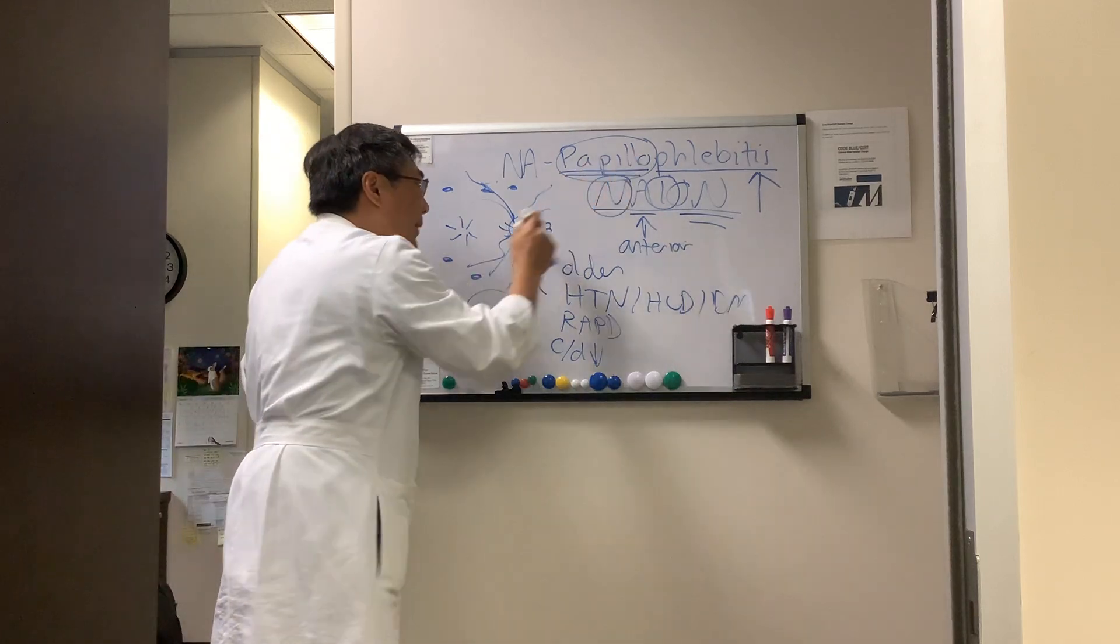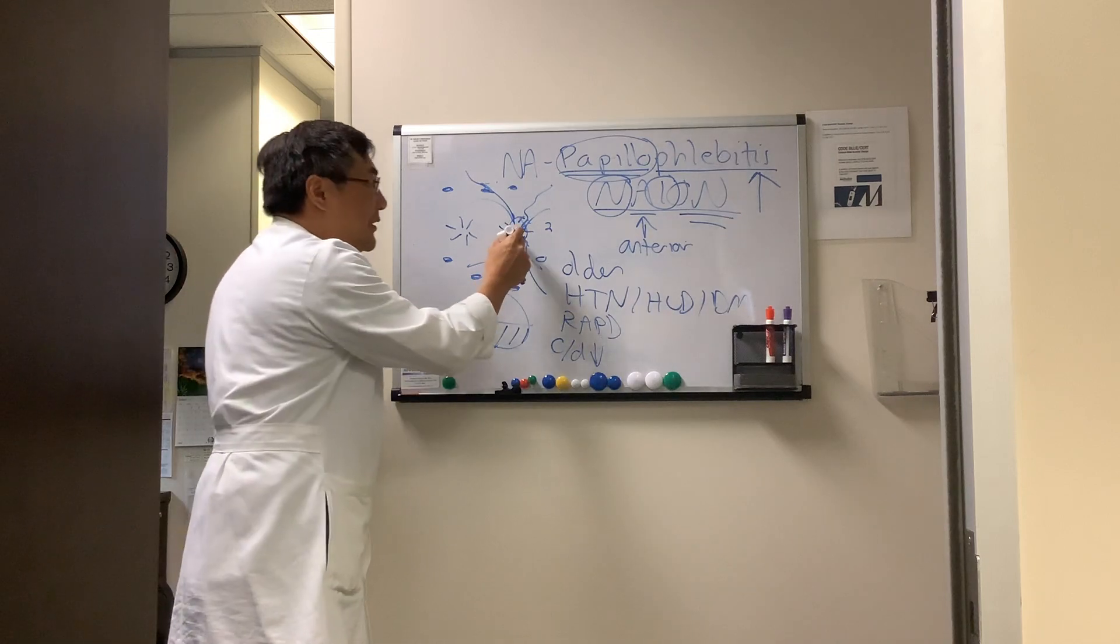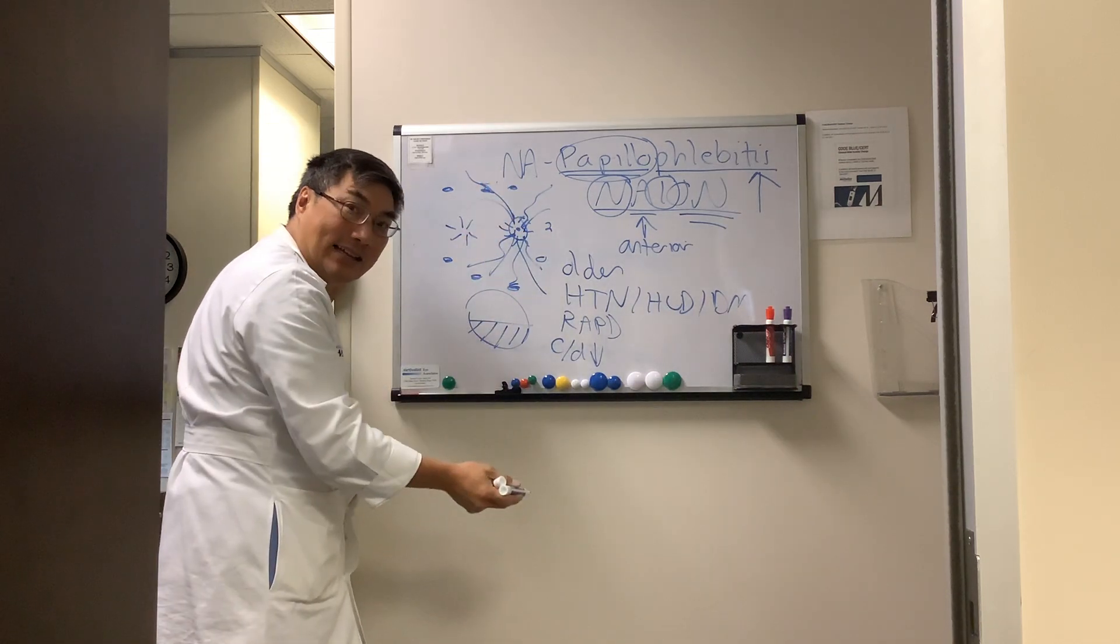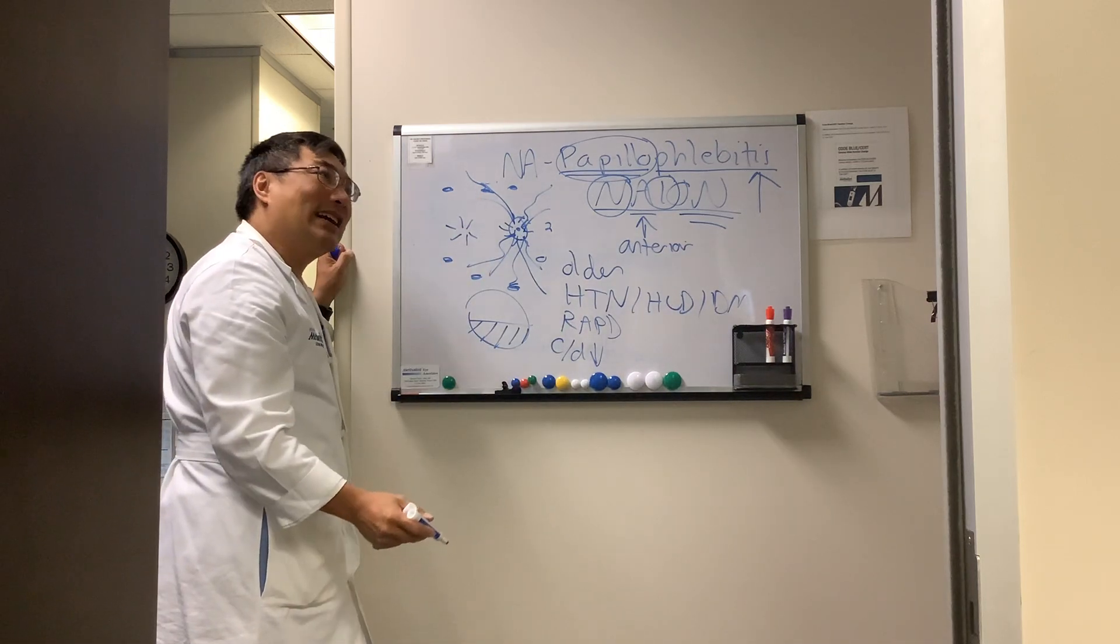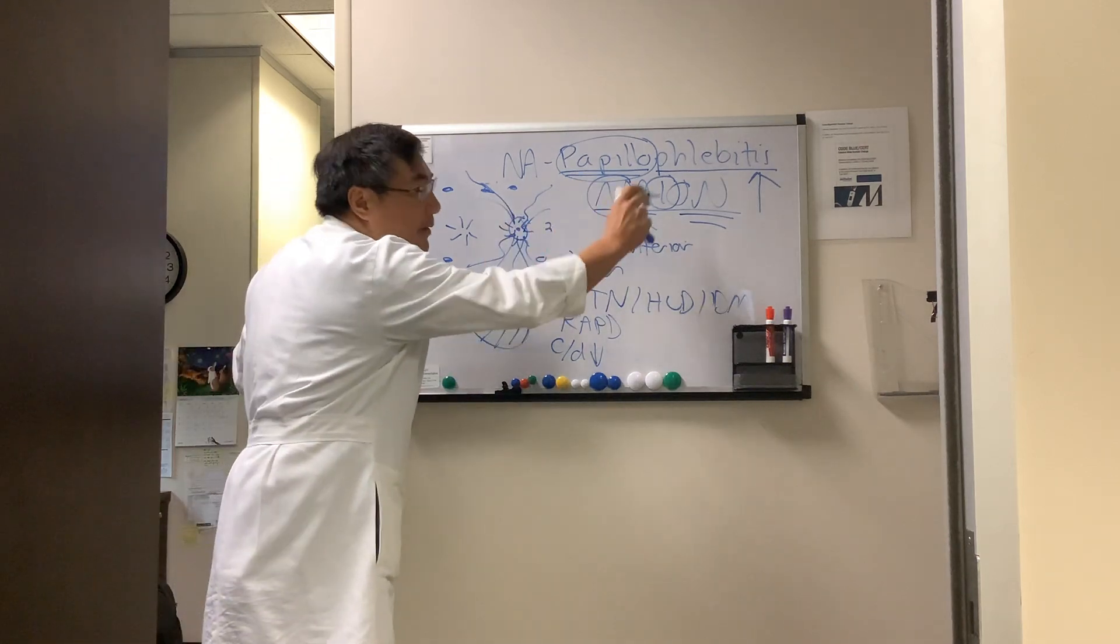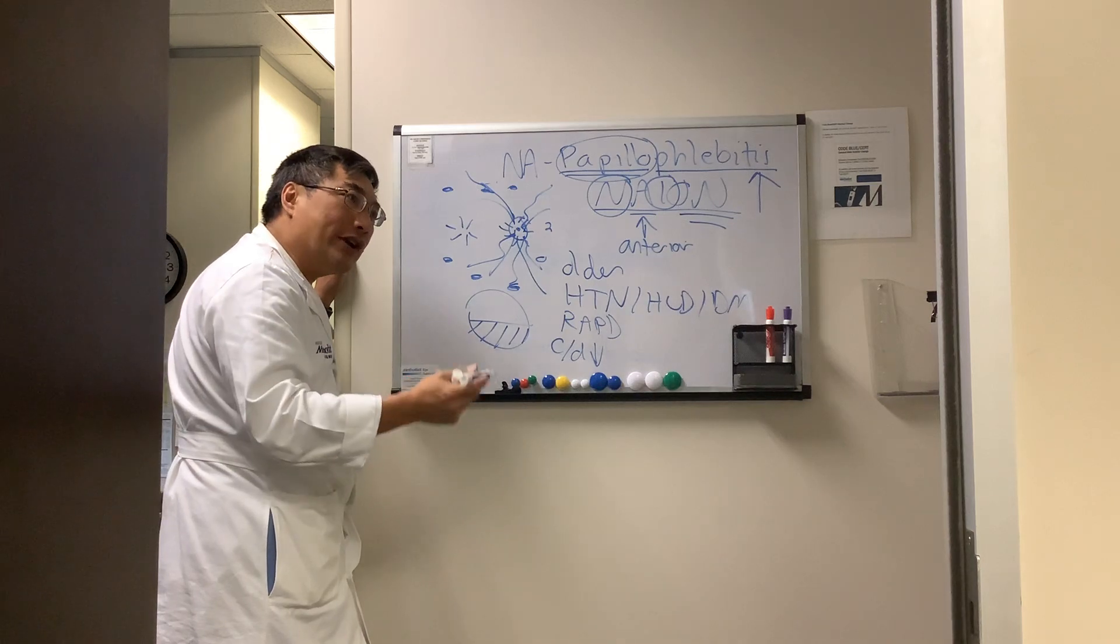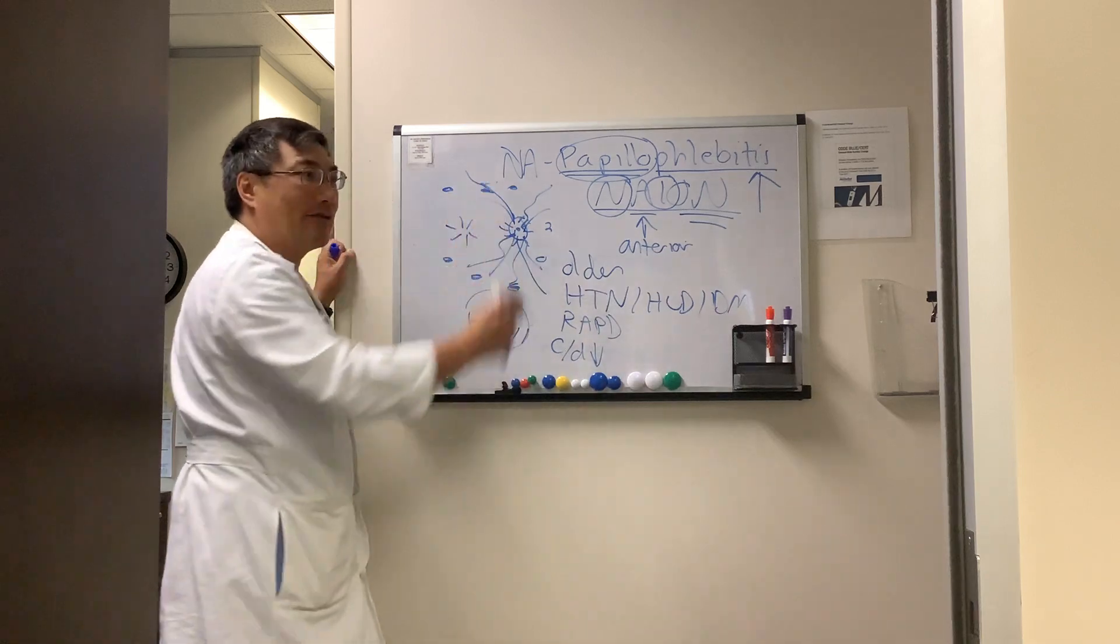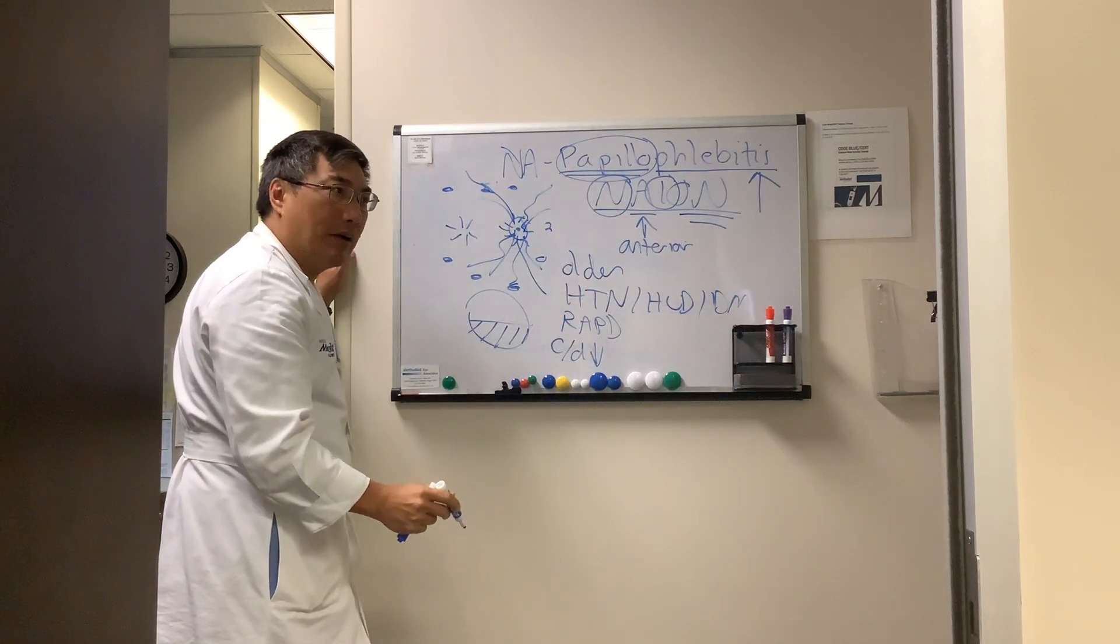In papilloflebitis, it is a focal retinal vein occlusion. The disc is just swollen secondarily. The dilated veins is secondary. The hemorrhages are secondary. And the macular edema, all secondary to occlusion of the vein. So papilloflebitis may actually be a form of an inflammatory central retinal vein occlusion that is incomplete, and so you don't get the full four-quadrant hemorrhage, and it causes the swelling of the disc that can mimic NAION.